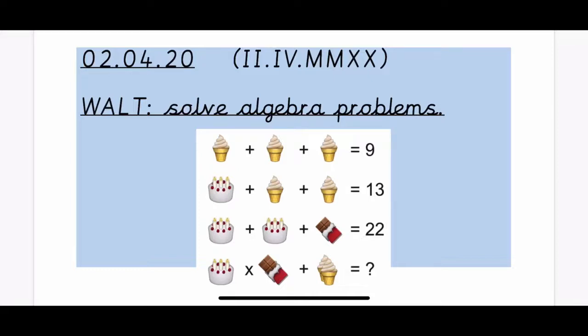The first line says ice cream plus ice cream plus ice cream equals 9. The second line is birthday cake plus an ice cream plus an ice cream equals 13. The third line is birthday cake plus birthday cake plus a chocolate bar equals 22.